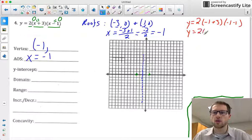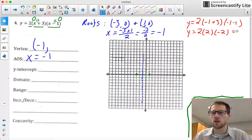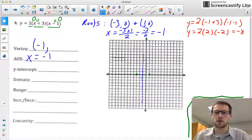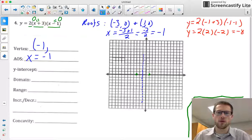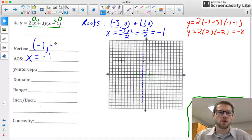We've got y = 2 times, that looks like it's going to be a 2, and this looks like it's going to be a -2. And 2 times 2 times -2 is going to give me -8. So my vertex is at (-1, -8).